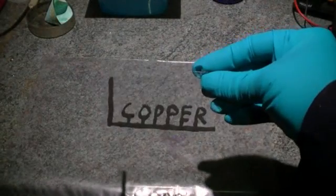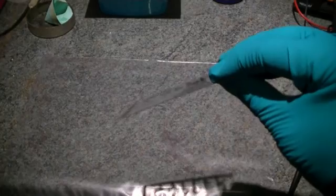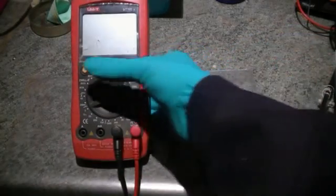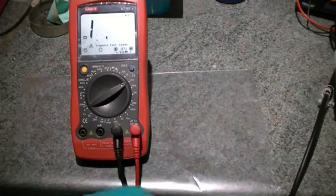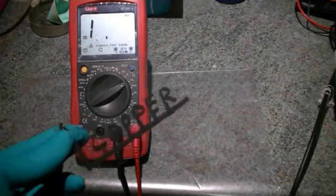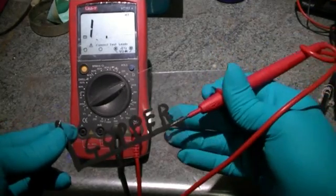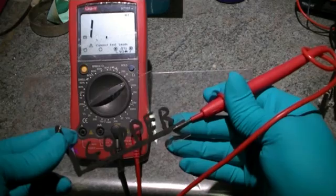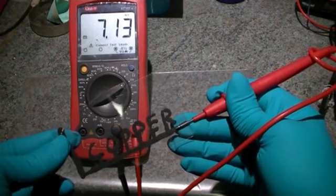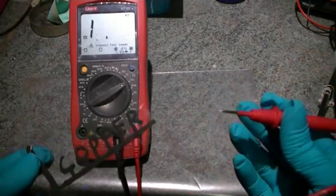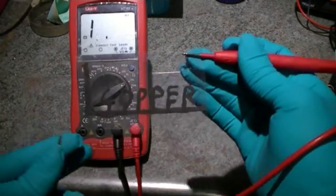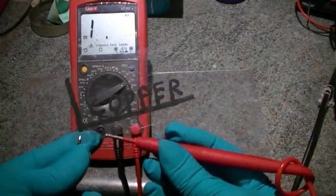We leave that to dry for an hour, and using a multimeter we can check the electrical resistance. So with our probes on either end, we've got around 7 kilo-ohms. If we transfer our probes to our polystyrene sheet, we can't measure any conductivity at all, so it's a very good electrical insulator.